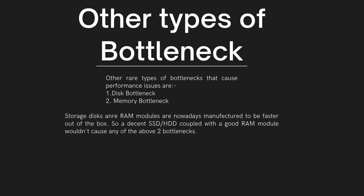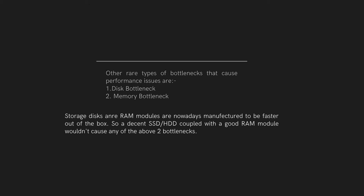Other rare types of bottlenecks that cause performance issues are a disk bottleneck and a memory bottleneck. Storage disks and RAM modules are nowadays manufactured to be faster out of the box, so a decent SSD or HDD coupled with a good RAM module wouldn't cause either of those two bottlenecks.